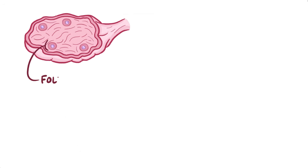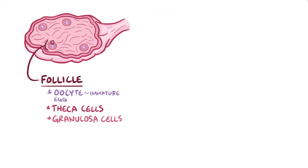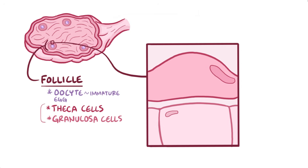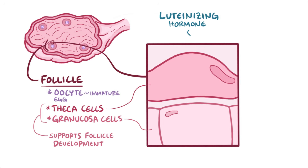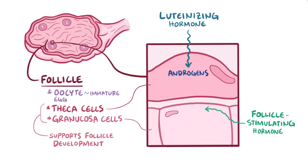Each ovary has multiple follicles. Each follicle is made up of an oocyte, which is an immature egg, surrounded by two types of cells: theca cells and granulosa cells. Granulosa and theca cells work together to support follicle development. Luteinizing hormone stimulates theca cells to generate androgens, and follicle-stimulating hormone stimulates granulosa cells to convert those androgens to estradiol using the enzyme aromatase. A large increase in estradiol triggers ovulation.